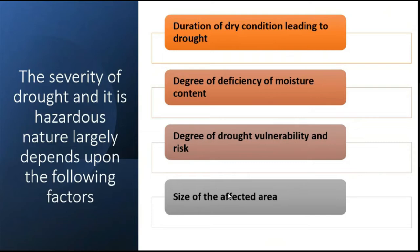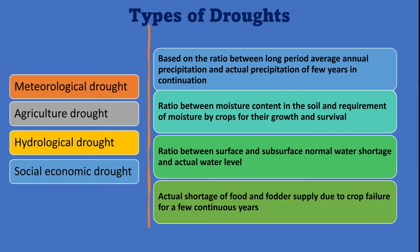The size of the affected area is another factor. If the affected area is small, it is quite manageable as water supply can be brought from other areas. However, if the area is large, it becomes quite difficult to manage the drought situation.